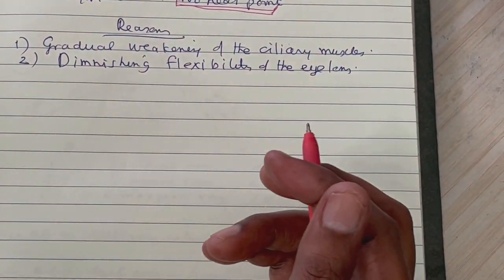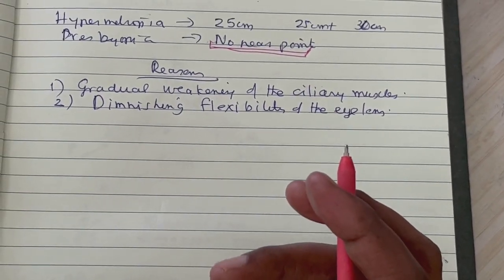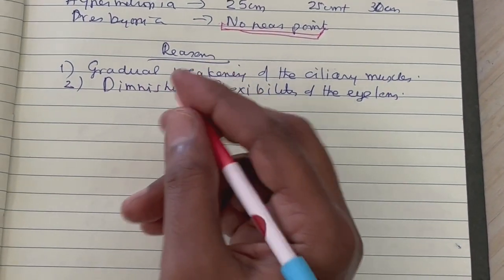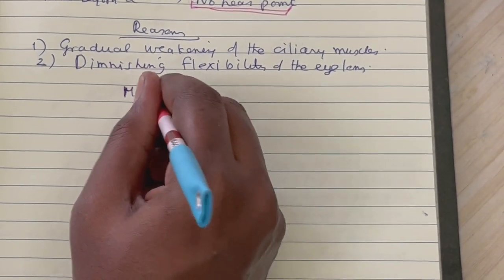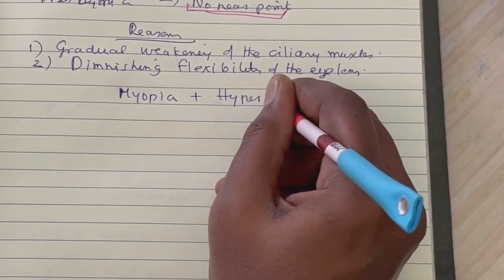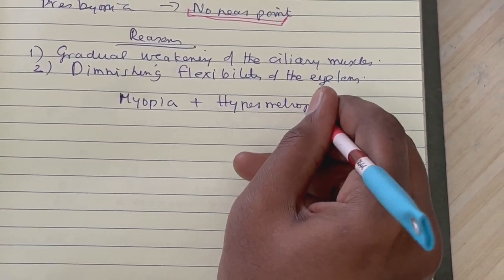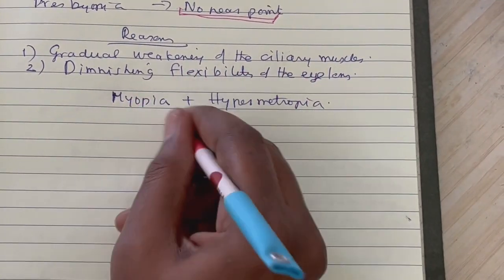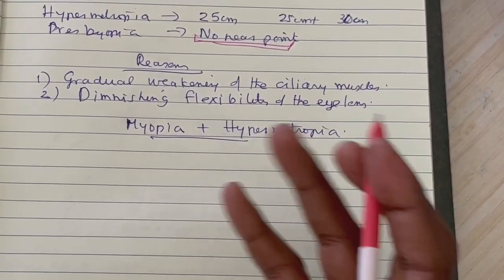Now how can we rectify it? There's an interesting condition where people could have both myopia and hypermetropia.